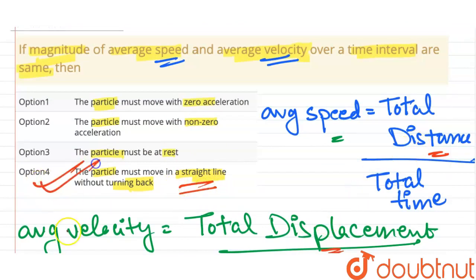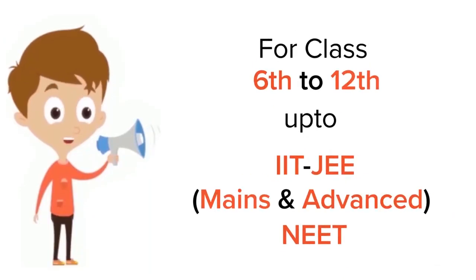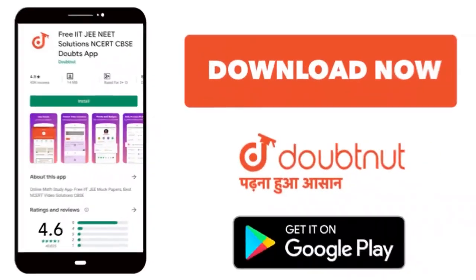So option 4 is the correct answer. That's all, thank you. For class 6-12, IIT, and NEET level, trusted by more than 5 crore students, download Doubtnet today.